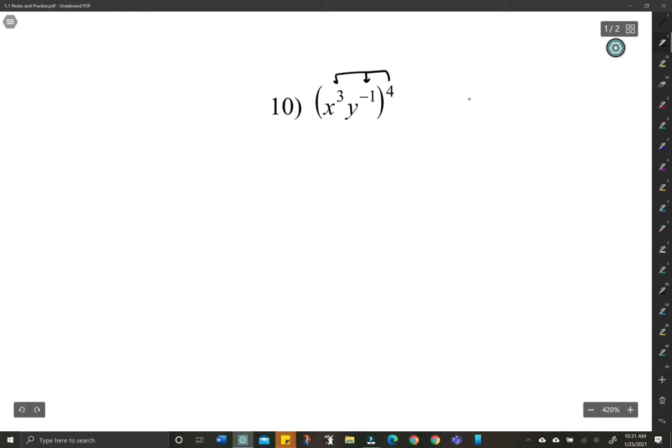So start by distributing the power. So it's going to be x to the 12, y to the negative 4. Again, negative exponents means we have to switch where the y is.